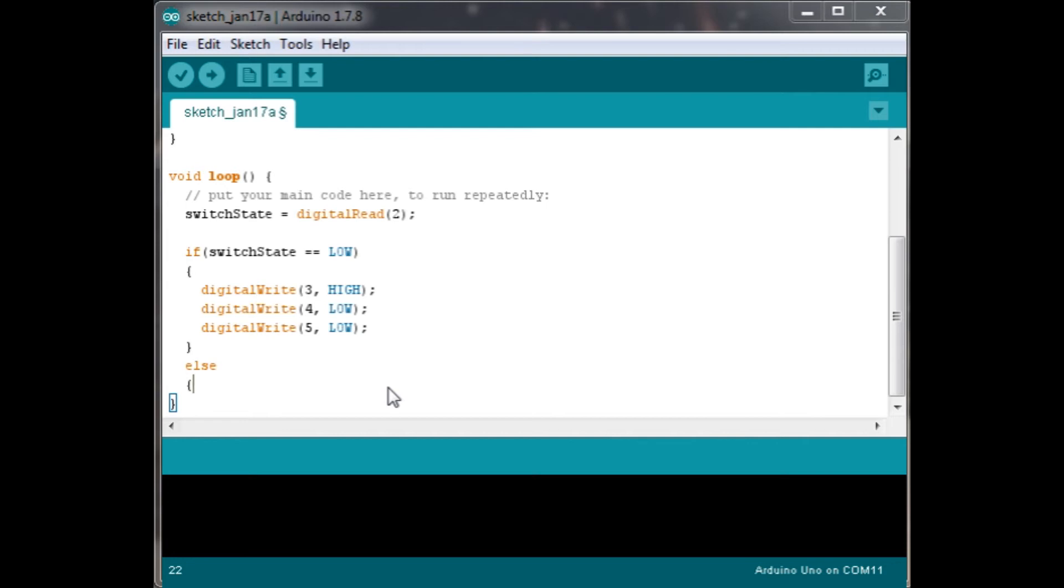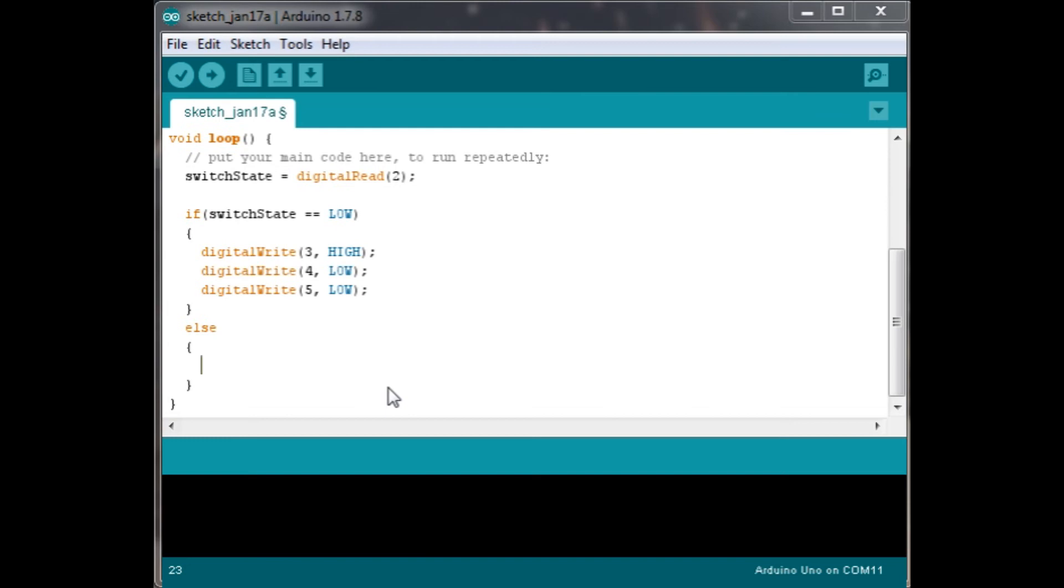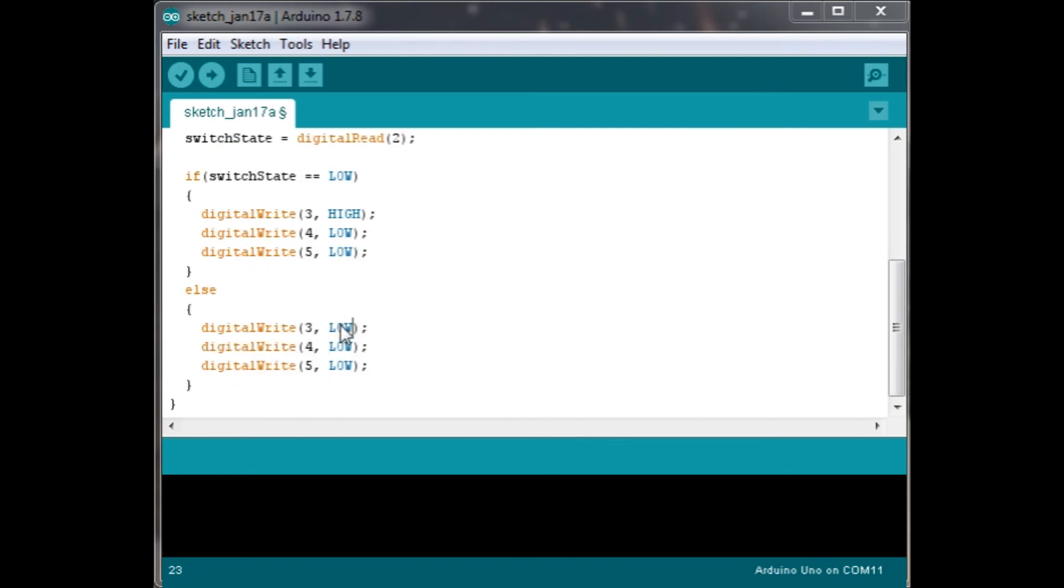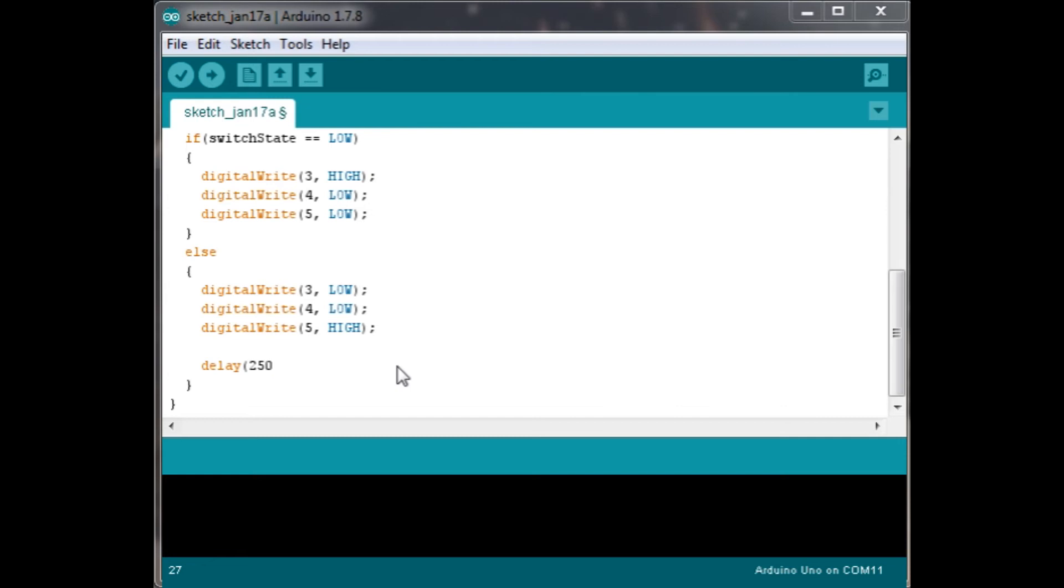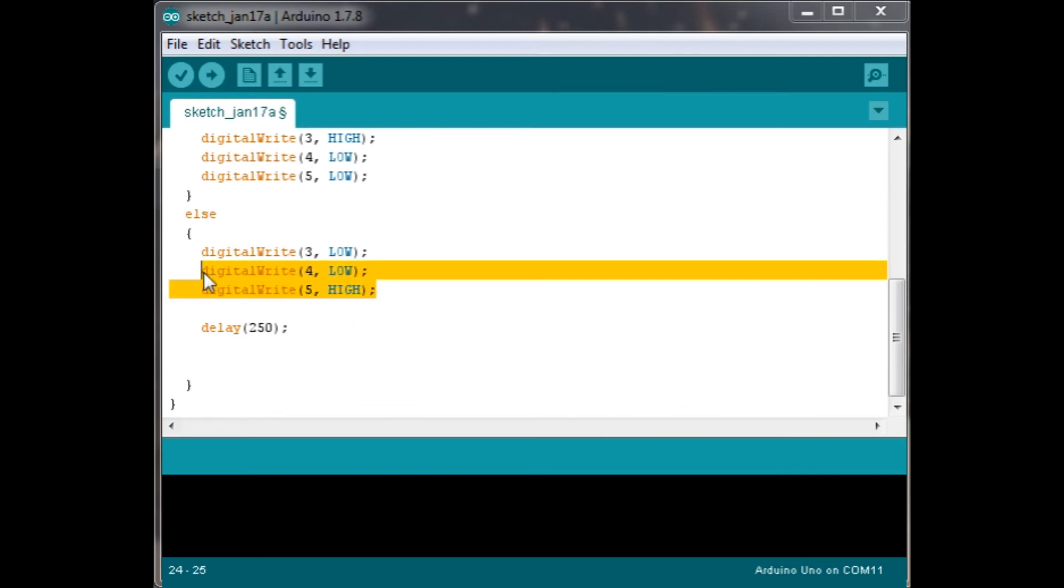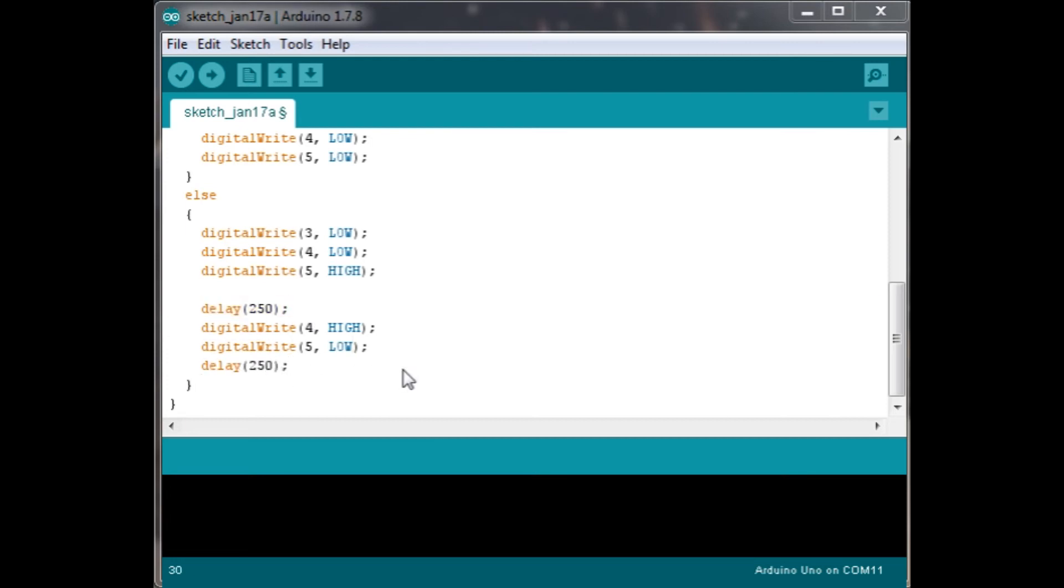Then we'll have an else. The way I'm laying out my code is slightly different from the one in the book. We will have digital write 3, 4, and 5 low, low, and high. We'll copy all this, and this will be low, low, and high for 3, 4 and 5. Then we're going to delay 250, and then digital write 4 and 5 high and low. We'll have a delay of 250, then digital write 4 and 5, and we'll swap them around high and low. Then we'll delay 250 one more time.